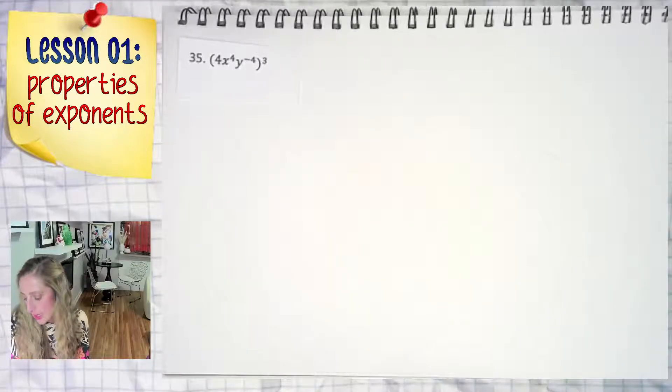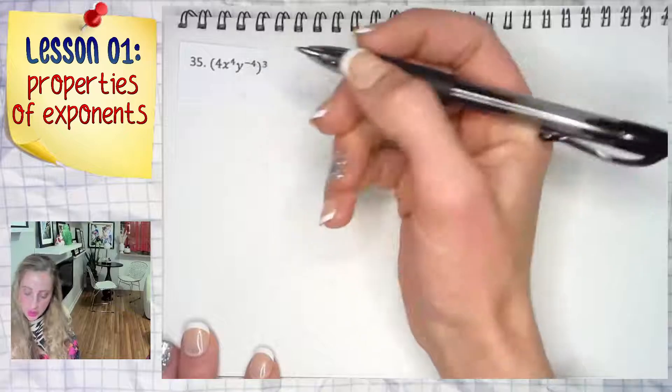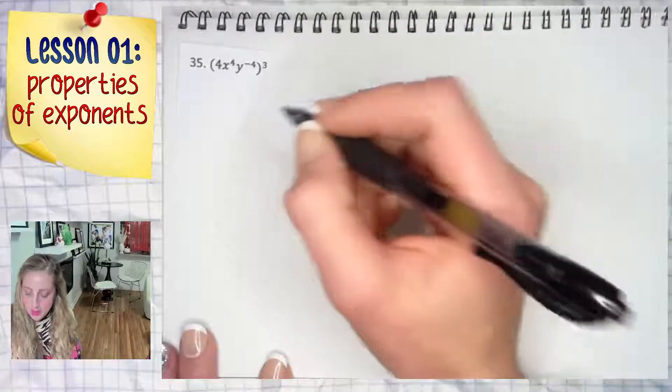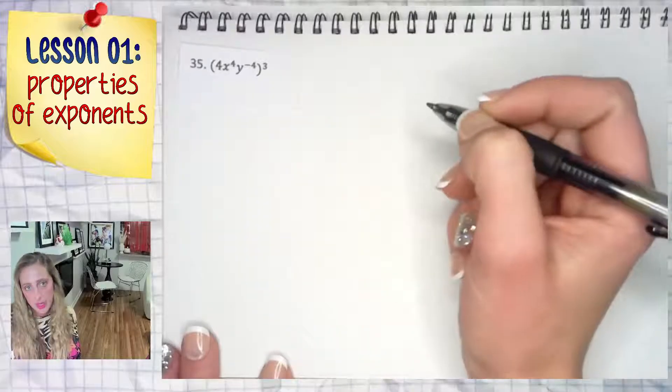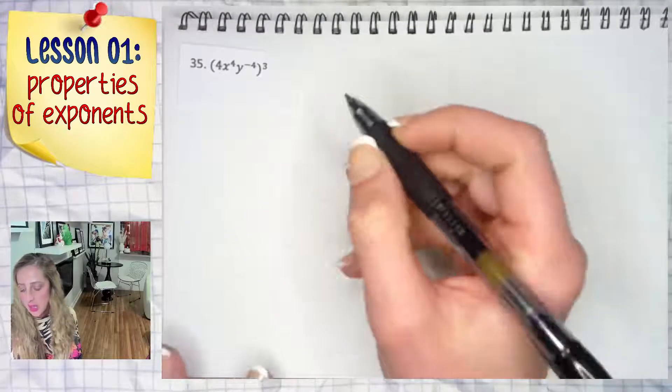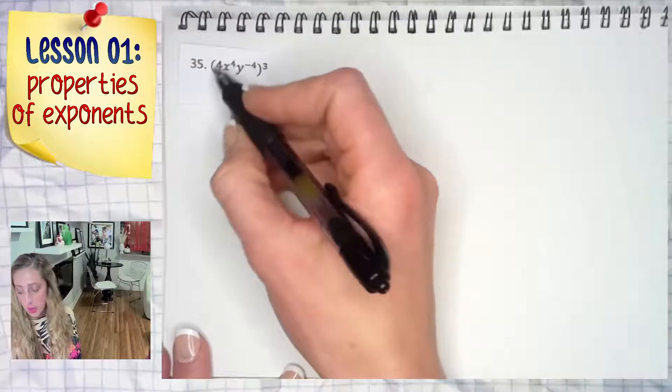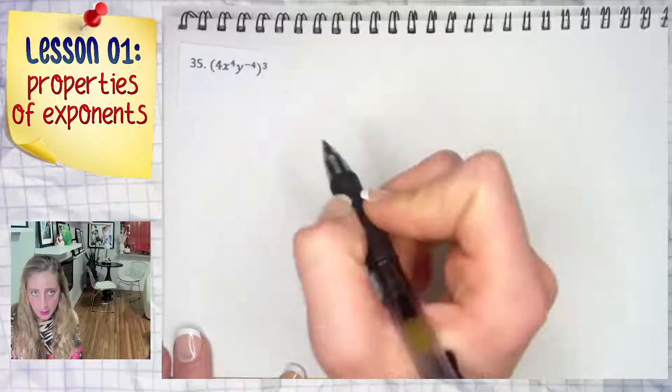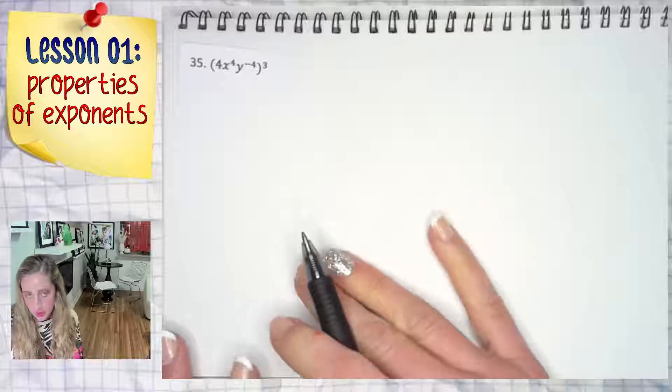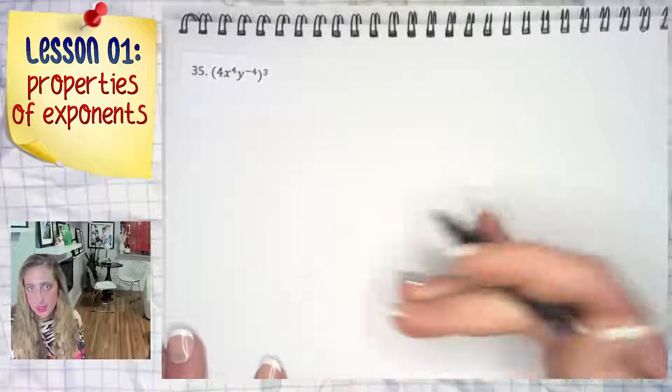Let's dive into this example here. We have 4x to the fourth y to the negative fourth, all being raised to the third. If you noticed, I didn't say 4x all to the fourth because that four is to the first power. Only the x is being raised to the fourth.